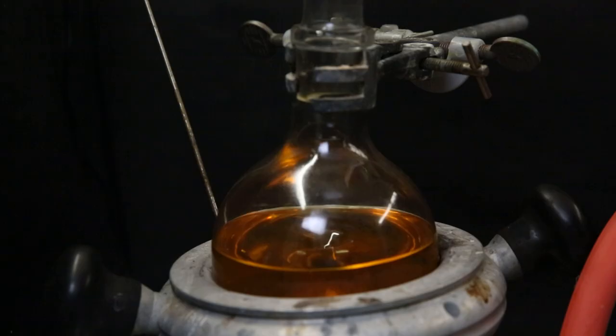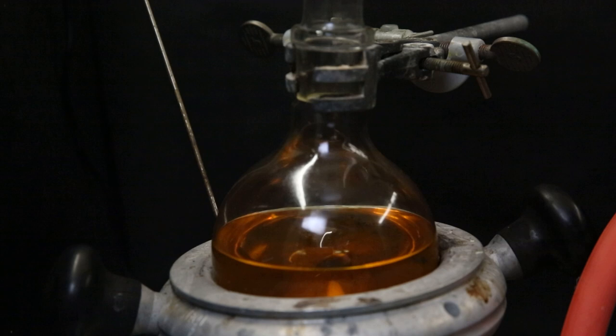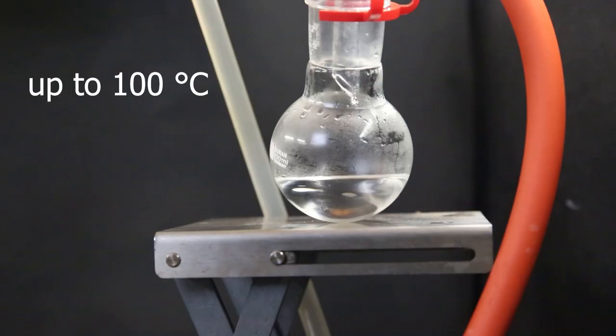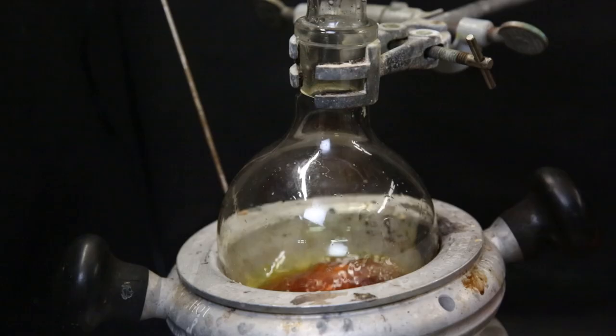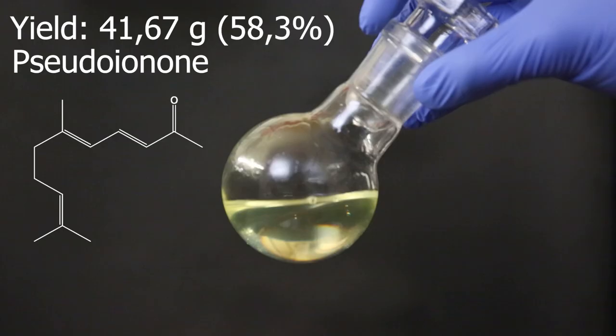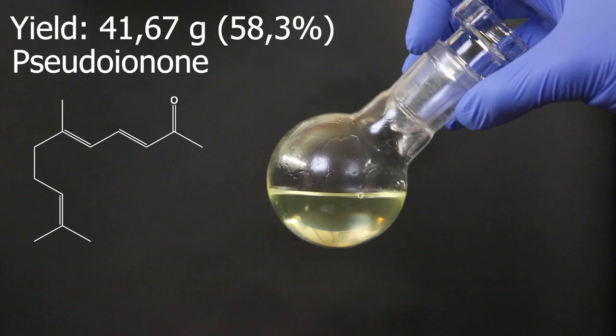Then I swapped the setup for a vacuum fractional distillation setup and collected the first fraction, which is likely some remaining solvent, unreacted citral and side products. After that, the pseudo-ionone started coming over between 100 and 110C. After this, no more came over and in the distilling flask some orange oil remains. In the end, I am left with 41.67 grams of pseudo-ionone, which is a yield of 58.3% if we assume 100% purity.